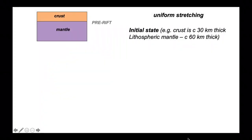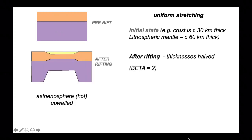Let's look at the consequences of uniform stretching. Here's the pre-stretching, pre-rift state. Here is the situation after rifting where we've generated a sedimentary basin above the stretched lithosphere. Notice that the base of the lithosphere has risen beneath the basin, meaning we have hot upper mantle, hot asthenosphere, upwelled.